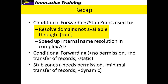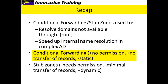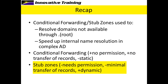To recap, conditional forwarding and stub zones are used to resolve domains that are not available by going through the root servers on the internet, or to speed up internal name resolution in a complex Active Directory environment. With conditional forwarding the pluses are no permission required and no transfer of records, but the minus is that it's static — if something changes you have to update it manually. With stub zones you do need permission and there is some transfer of records, but the pro is that it's dynamic, so if anything changes you'll get the updates directly.